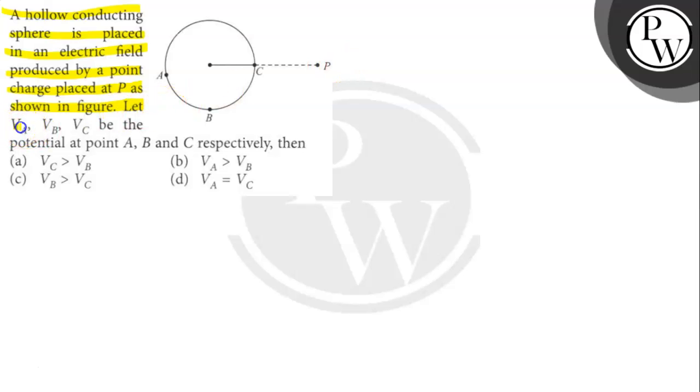Let VA, VB, VC be the potential at point A, B and C respectively. Then what will be the answer?